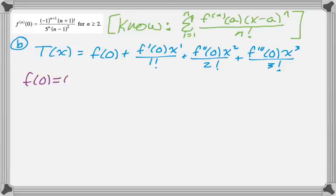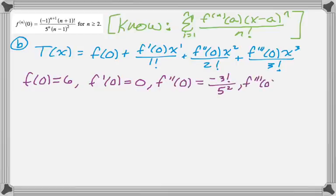So I know f of 0 is 6 because it was given. I know f prime of 0 is 0 because we figured that out. f double prime of 0, we also figured out. And then f triple prime of 0, I'm going to plug 3 into that formula now.